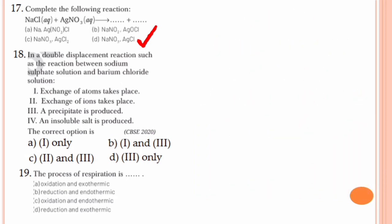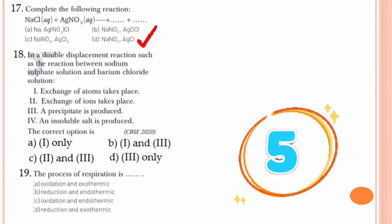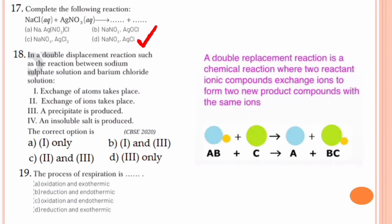Question number 18. In a double displacement reaction such as the reaction between sodium sulphate solution and barium chloride solution: exchange of atoms takes place; exchange of ions takes place; a precipitate is produced; an insoluble salt is produced. In a double displacement reaction, ions are exchanged between the two reactants, and one of the products is usually a precipitate. Statements 2 and 3 are true, so the correct option is option C, 2 and 3.